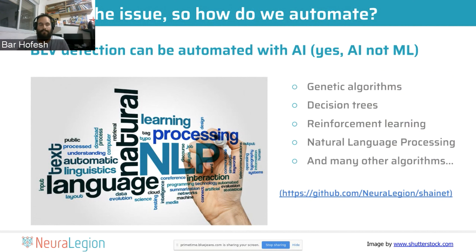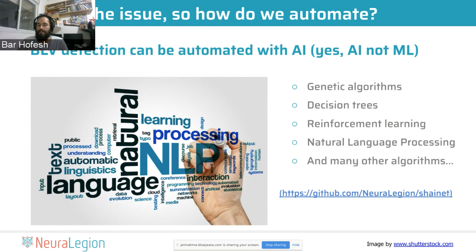What different technologies did we use for these experiments? Genetic algorithms, decision trees, reinforcement learning, natural language processing, and a bit more. There is a link to an open source project that we've been working on for around two years that has most of our understandings, ideas, and innovation — allowing each and every one of you to play around with the algorithms, different datasets, and try to see what you can achieve.